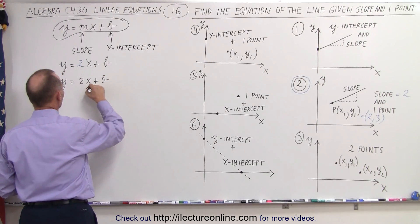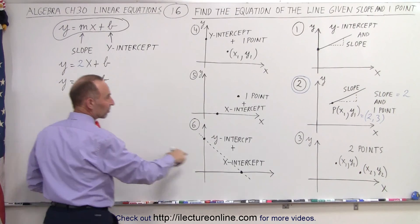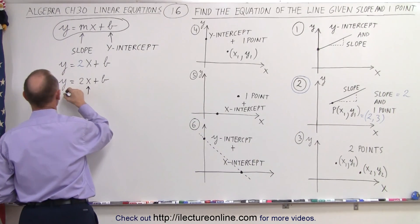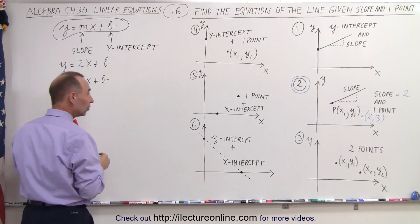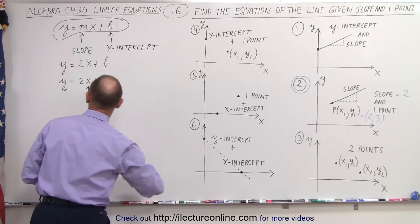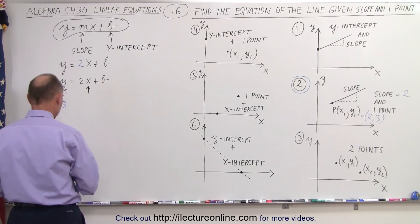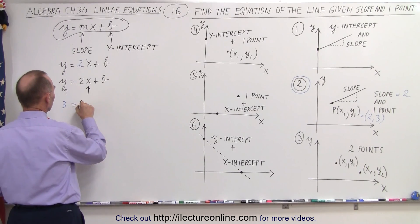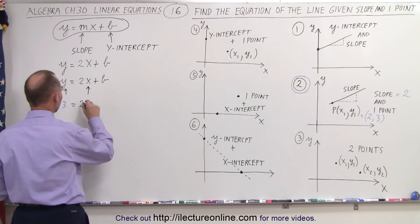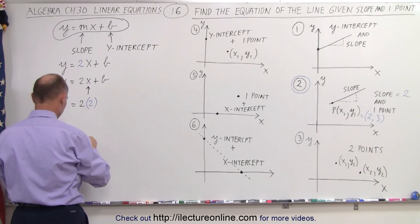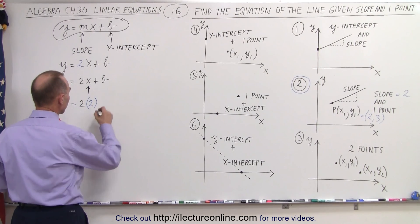So here we're going to plug in the value for x which is 2, and here we're going to plug in the value for y which is 3. So when we do that, we get 3 is equal to 2 times x, and x is equal to 2, plus b.